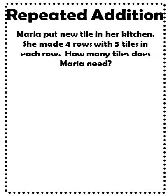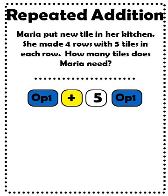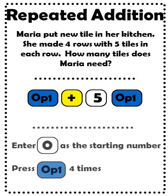The next way to use constant operations is for repeated addition as in multiplication. Maria put new tile in her kitchen. She made 4 rows with 5 tiles in each row. How many tiles does Maria need? You can solve this problem by skip counting by 5. To put the constant operation of adding 5 into your calculator, press OPT1, plus 5, and then OPT1 again. Now that this function is saved, you can skip count starting at 0. To solve this problem, you need to skip count by 5 four times, so press OPT1 four times.